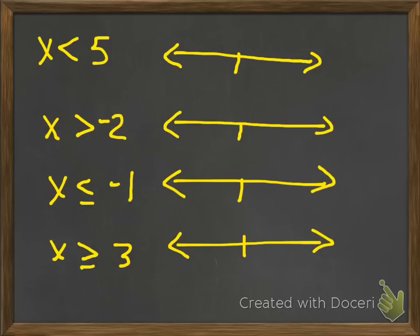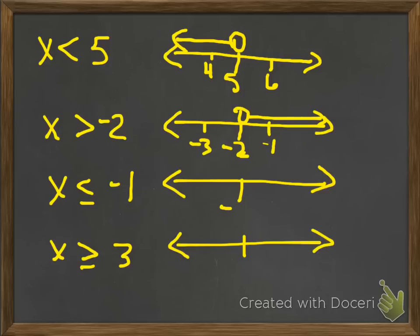Okay, so hopefully you've already graphed, because you paused the video, but let's look at the different answers. Okay, here I got 5, I'm going to put an open dot, because it says no line underneath, and then shade to the left. Next one, open dot, shade to the right. Next one, closed dot, shade to the left. And next one, closed dot, shade to the right.